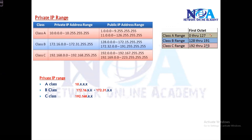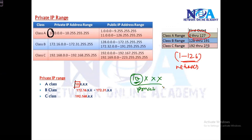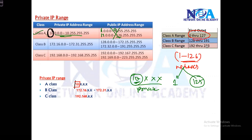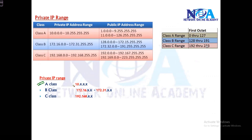In Class A, the range goes from 1 to 126 — 0 and 127 cannot be used — giving a total of 126 networks. Out of these 126 networks, only one network is private: any address starting with 10. So whenever you see an address starting with 10, it is a private address. The remaining 125 networks (1–9 and 11–126) are all public. Remember only the private range — anything starting with 10 is private, all others are public.